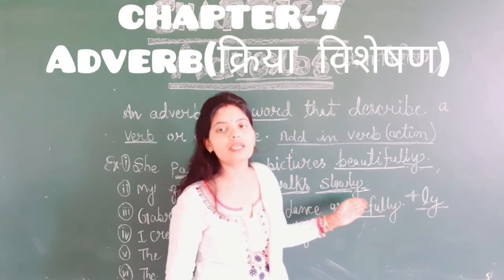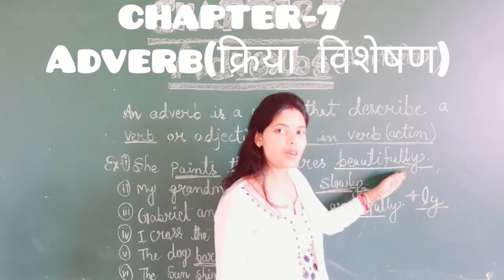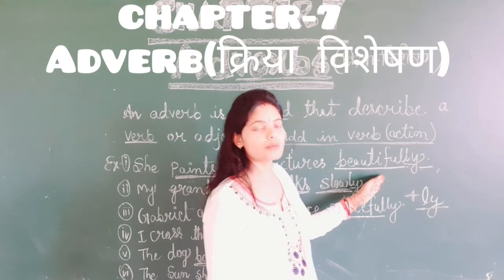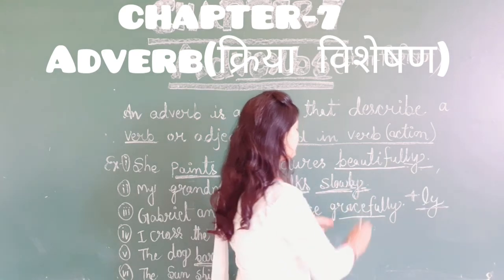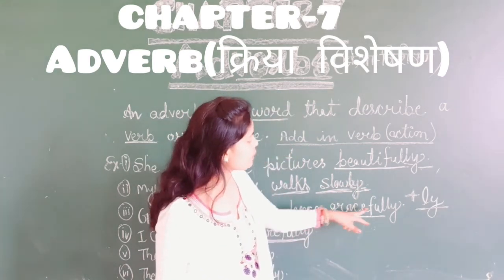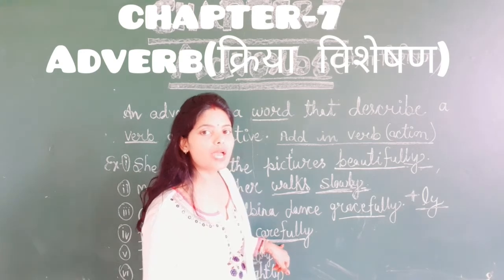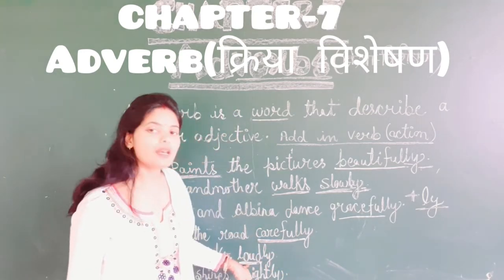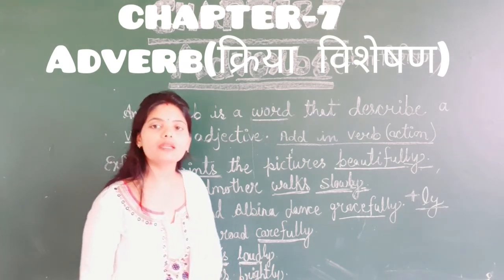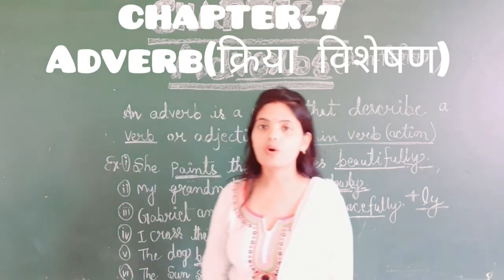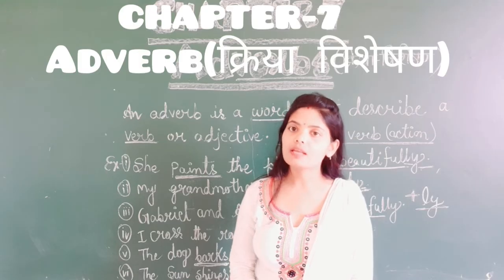By adding '-ly' we form an adverb. Like beautiful — we added '-ly', it becomes beautifully. Slow — we added '-ly'. Graceful — we added '-ly', it becomes gracefully. Careful — we added '-ly'. Loud — we added '-ly'. Bright — we added '-ly'. So these words ending in '-ly' are called adverbs.